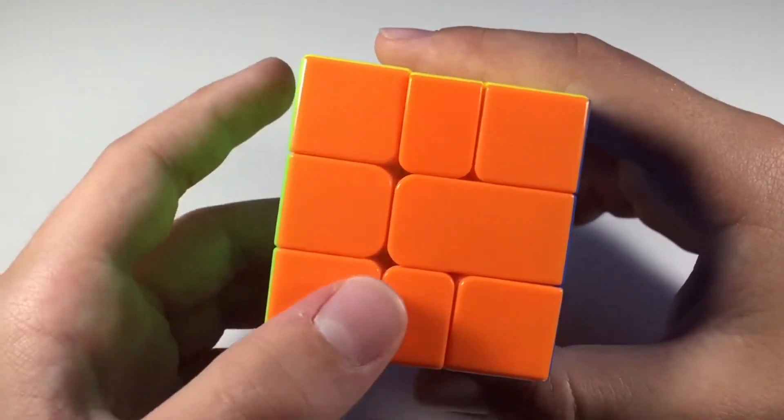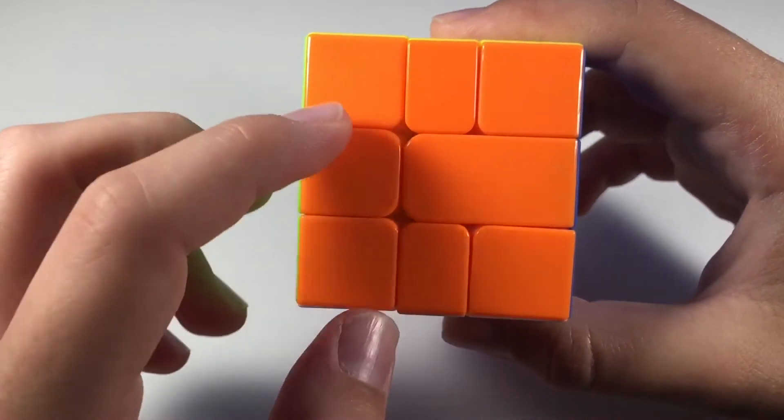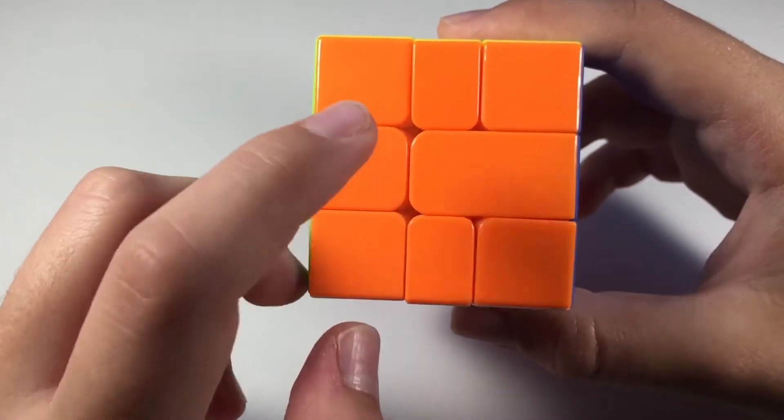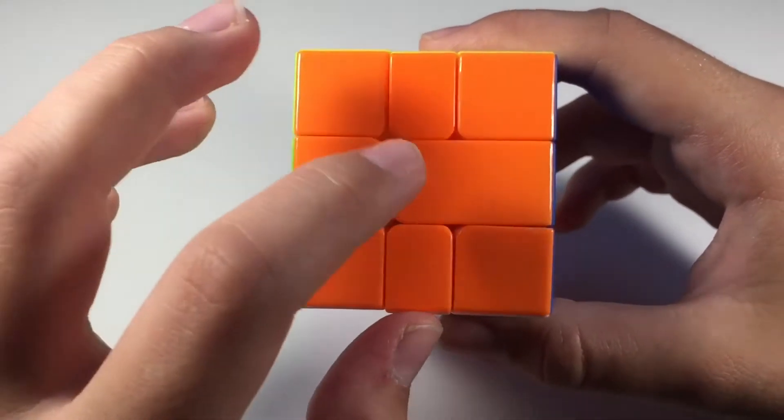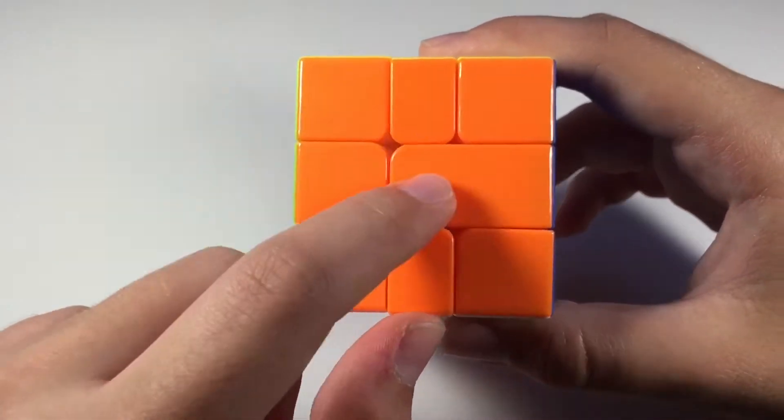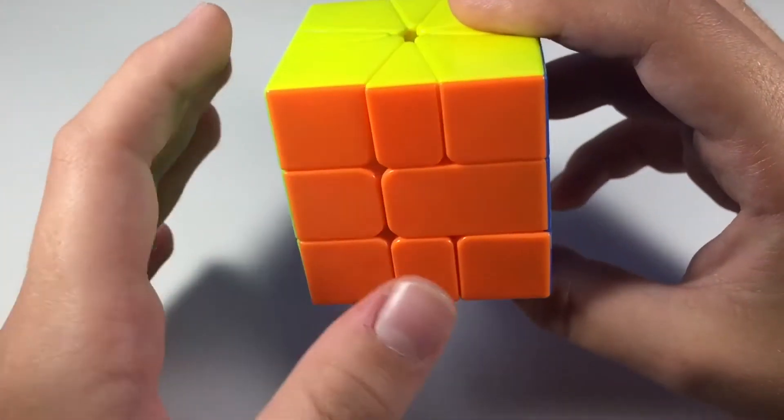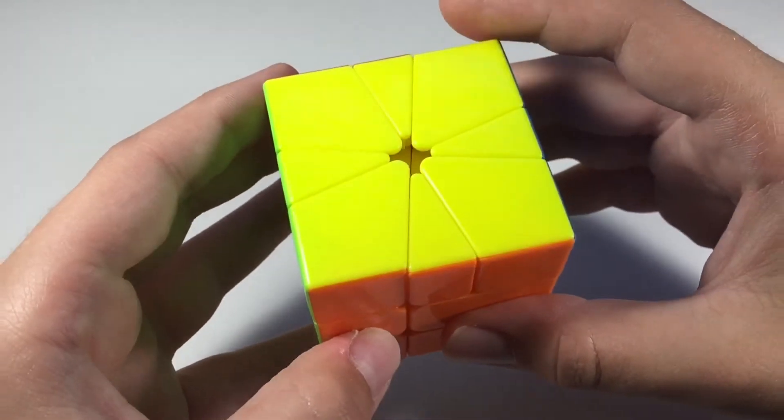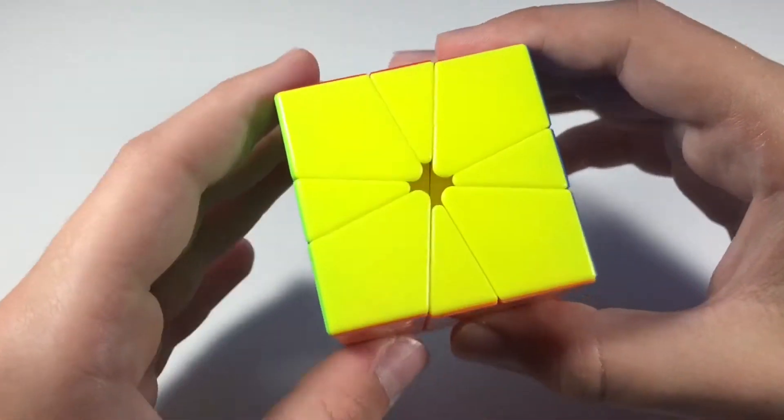Also, something you want to do during Square-1 algorithms is to hold the small part of the equator on the left and the long part on the right. This is essential, or else you might end up doing the algorithm the wrong way.